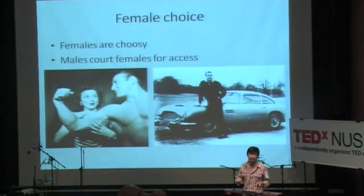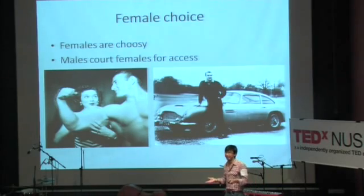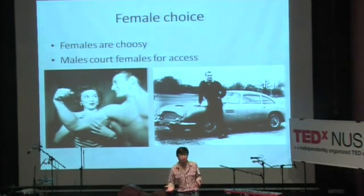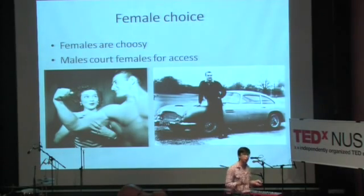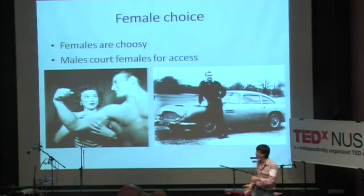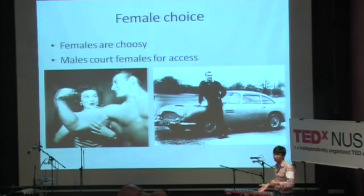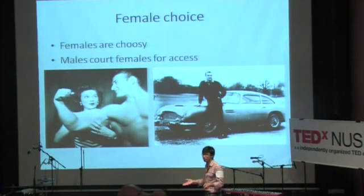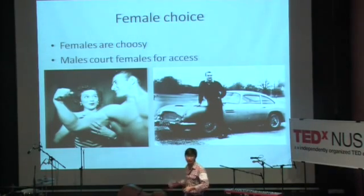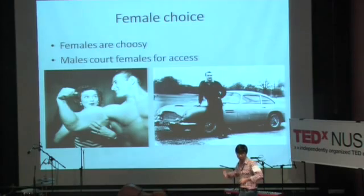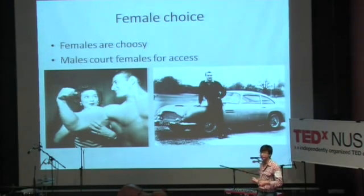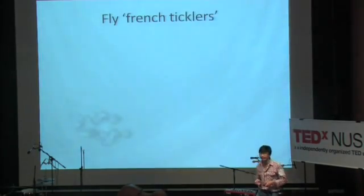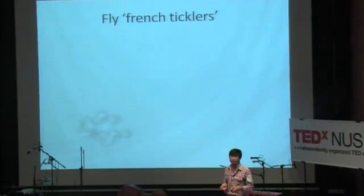One of the more interesting classical theories is female choice. Basically, females are being very choosy, so males have to court the females in order to gain access to sex. You can do it by being physically attractive, or by having lots of resources — there's a saying about how bald men always like to have big cars to show they have lots of resources to attract females. In a particular species of fly, they have actually developed very specific morphology just to impress the females.